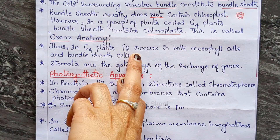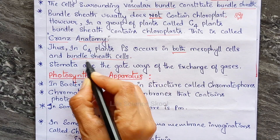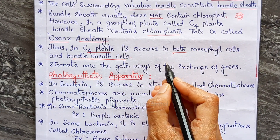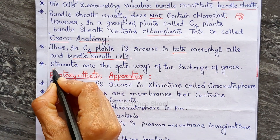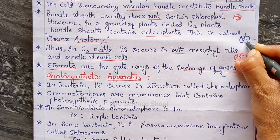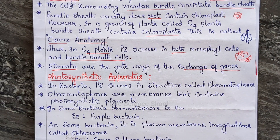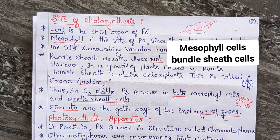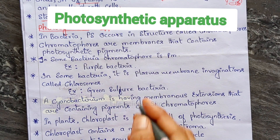Thus in C4 plants, photosynthesis occurs in both mesophyll cells and bundle sheath cells, because bundle sheath cells have chloroplasts. In normal plants, bundle sheath cells lack chloroplasts. Stomata are the gateways of exchange of gases. To summarize the site of photosynthesis: it is mesophyll cells in normal plants, and both mesophyll cells and bundle sheath cells in C4 plants.